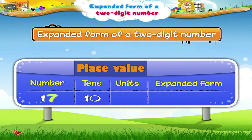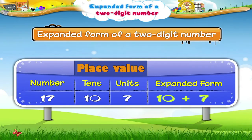So, its place value is 7. When we add both the place values, we get 10 plus 7. This is the expanded form of 17. So, the expanded form of 17 is 10 plus 7.